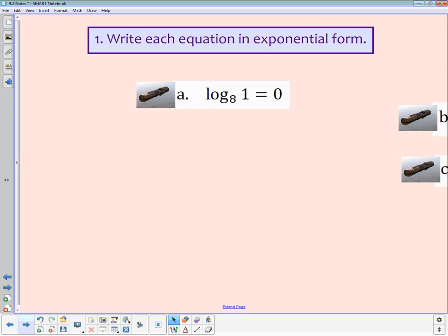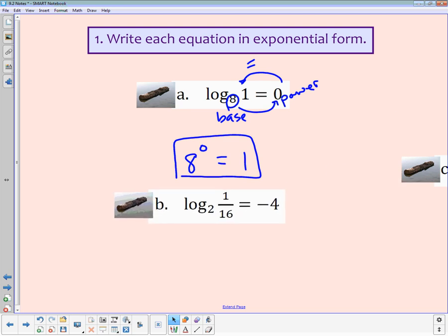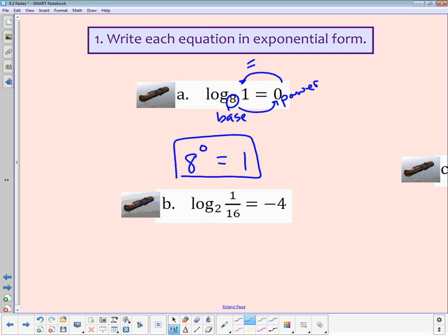So let's start with going from logarithm to exponential. So in a log function, log base 8 of 1 is equal to 0. What I know is that this right here is my base. It was raised to that power, and it equaled that answer. So what that means is I have 8 to the 0 power, which is equal to 1. That would be the exponential form. And we all know that any number raised to the 0 power is 1. And that's a good point about these. You can always check these using your calculator.